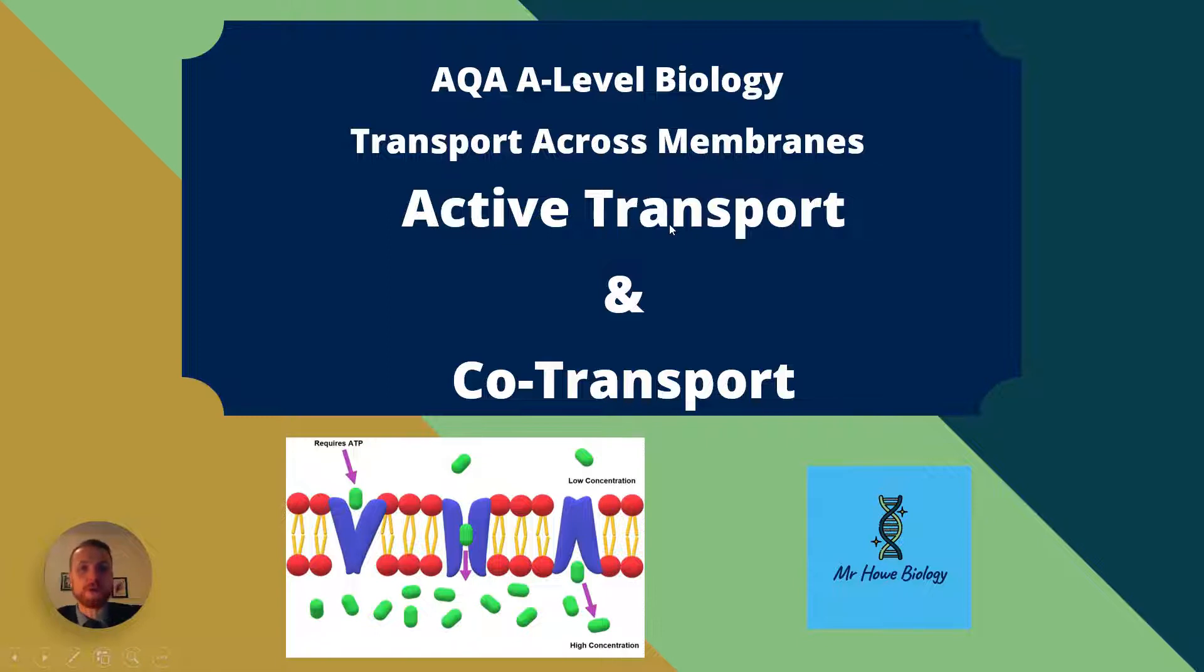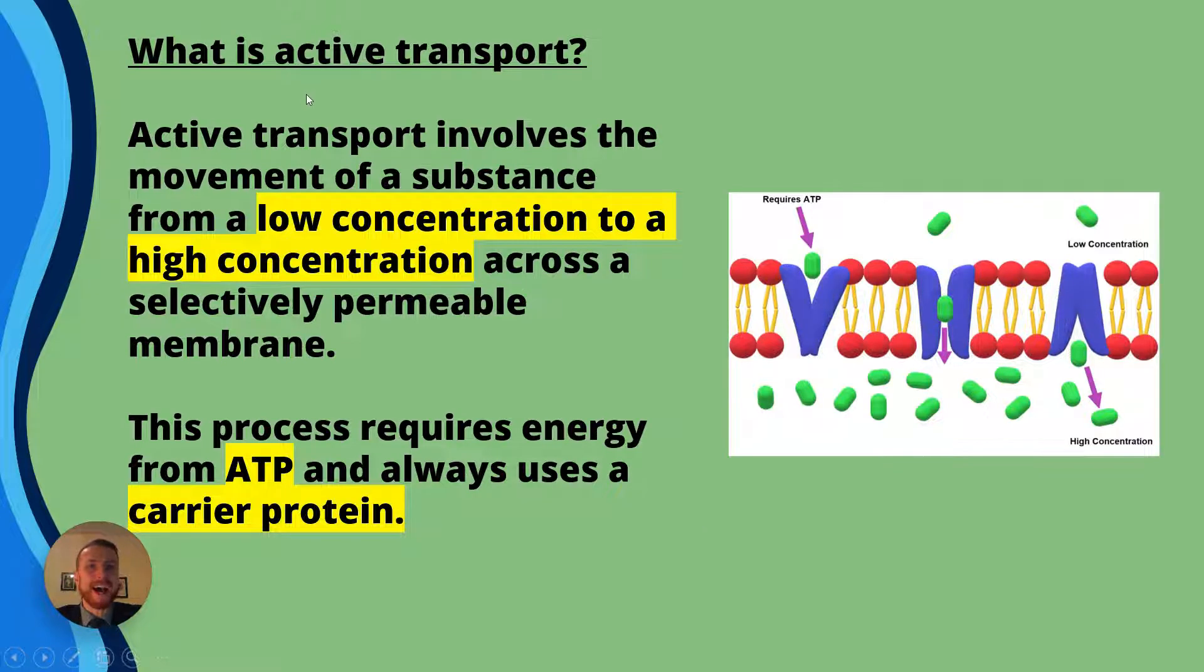Now we're going to be looking at active transport and co-transport in detail. So what is active transport first of all? Well active transport involves the movement of a substance from a low concentration to a high concentration across a selectively permeable membrane. Now we can see that in this diagram here where the substance is passing through a carrier protein from a lower concentration here represented by the fewer amount of green molecules to a relatively high concentration here represented by a greater number of molecules.